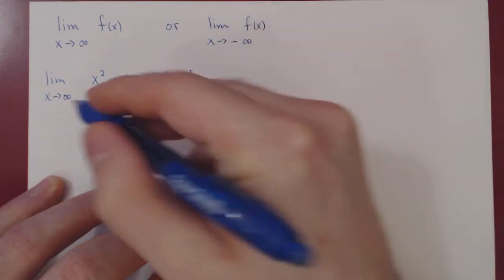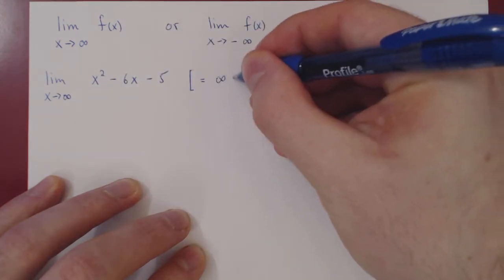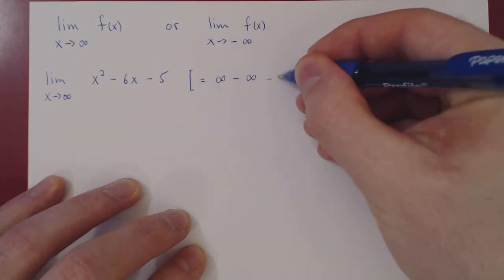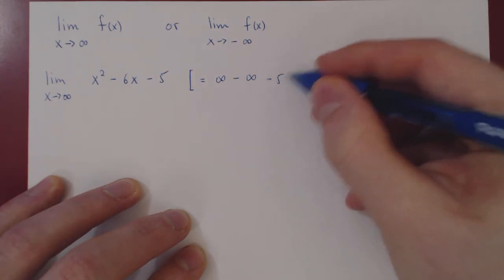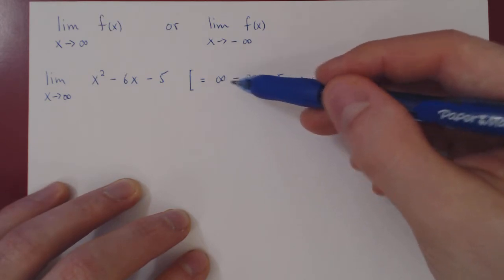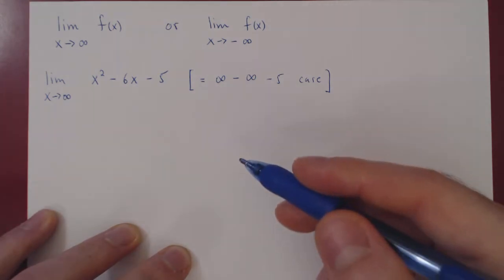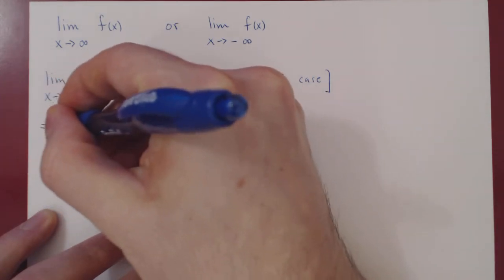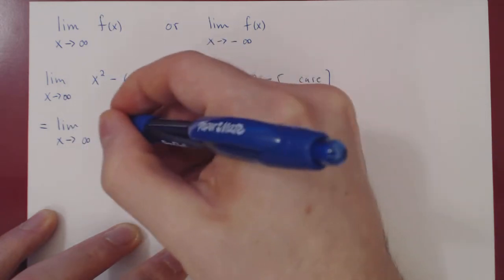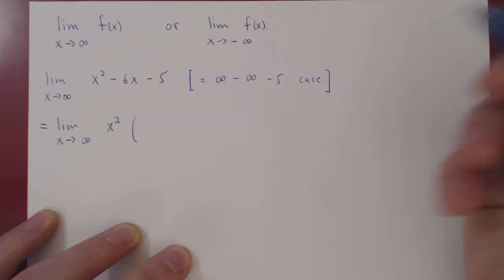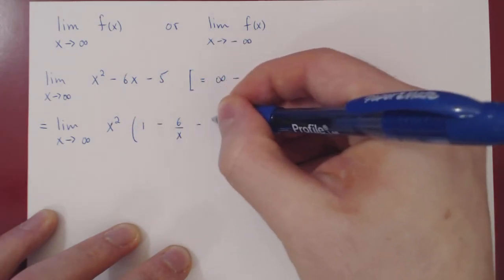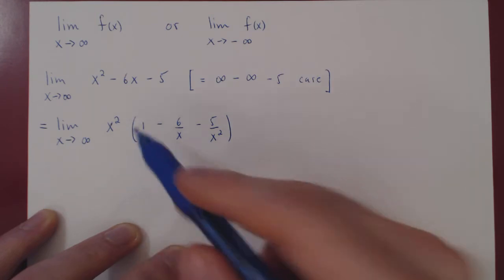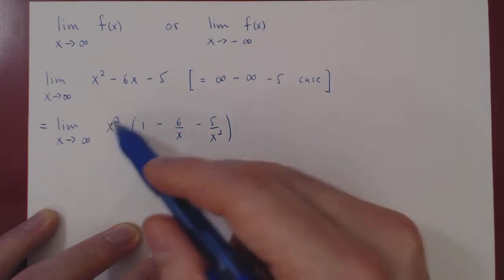As x approaches infinity, x squared will also approach infinity. Minus — as x goes to infinity, 6x also goes to infinity, so we have minus infinity, and then minus 5. We could drop the 5, but ultimately we have something very big minus something very big. All we have to do is factor the larger power of x, which is 2. If we factor x squared, we're left with 1 minus 6 over x minus 5 over x squared. You can multiply out to check: x squared times 1 is x squared, x squared over x is x, and this cancels to give back your negative 5.